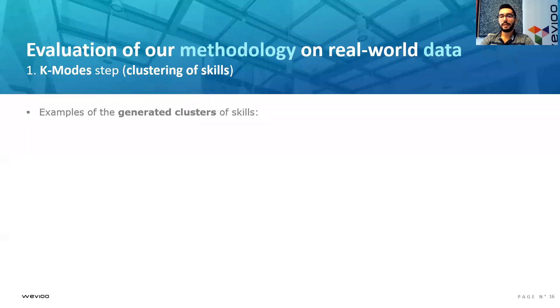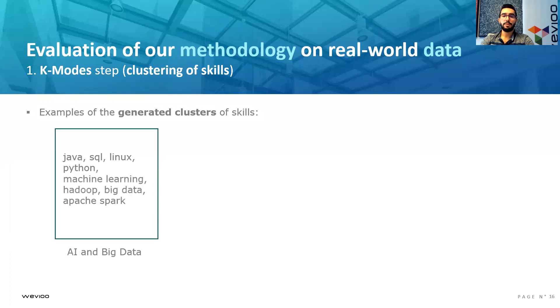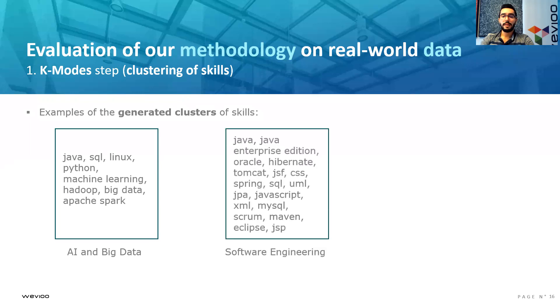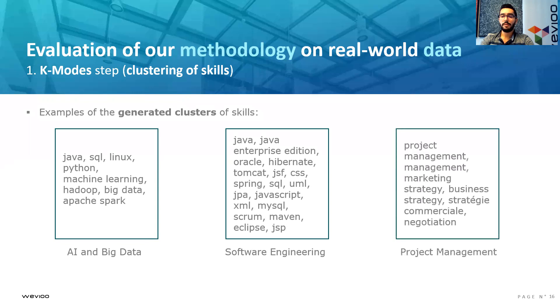Some of the generated clusters of skills are, for example, the first one that contains Java, SQL, Linux, Python, Machine Learning, Hadoop, Big Data, Spark, that we can name AI and Big Data. The second one contains Java, Hibernate, Spring, Maven, Scrum, and we can name it Software Engineering. Another example contains Project Management, Strategy, Business Strategy, and we can name it Project Management. You can see that there are some skills that belong to multiple clusters at the same time.